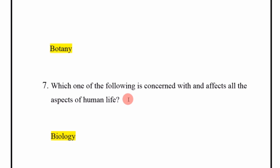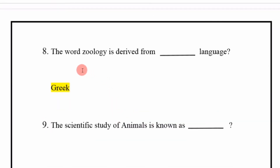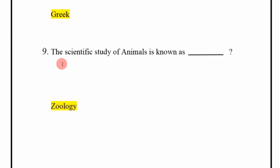Which one of the following is concerned with and affects all the aspects of human life? Answer: Biology. The word zoology is derived from which language? Answer: Greek.